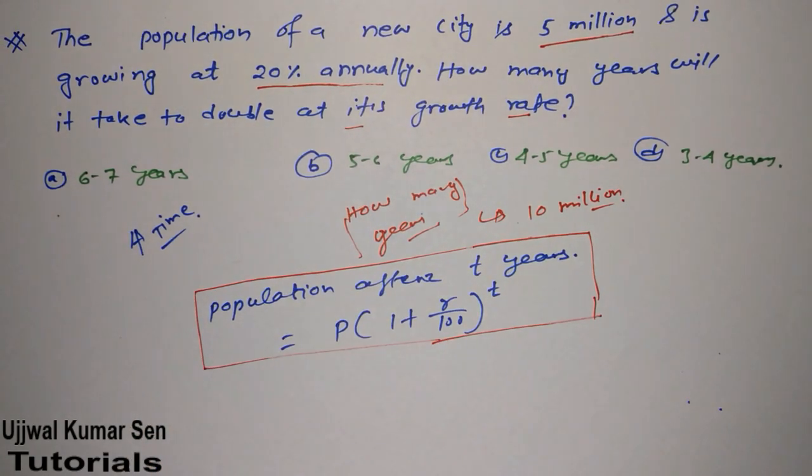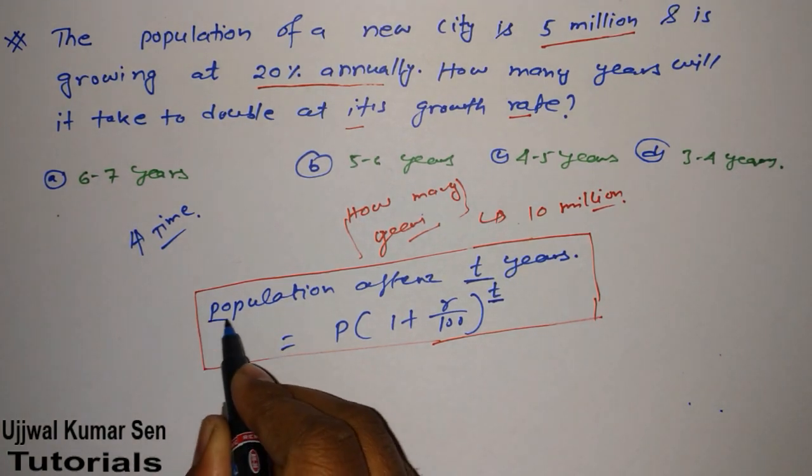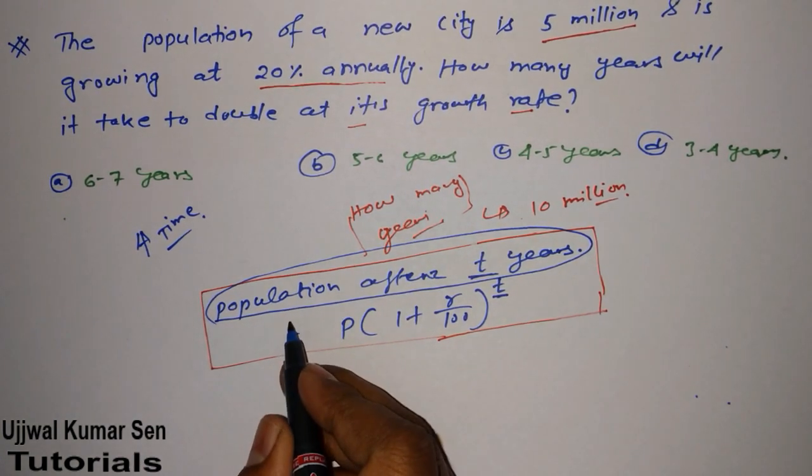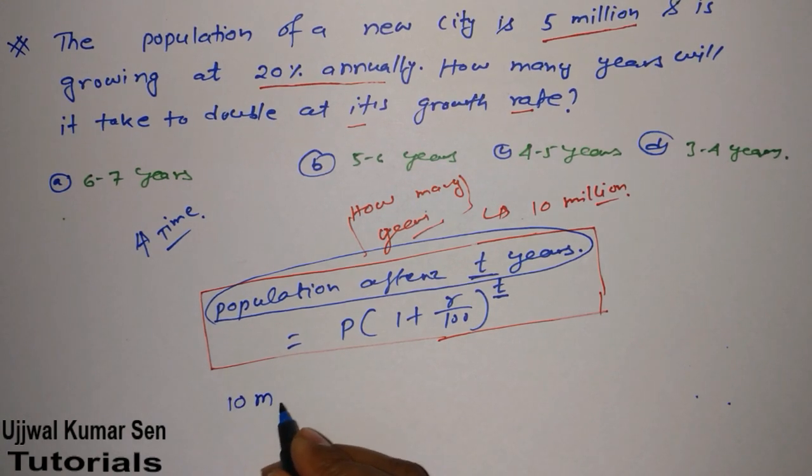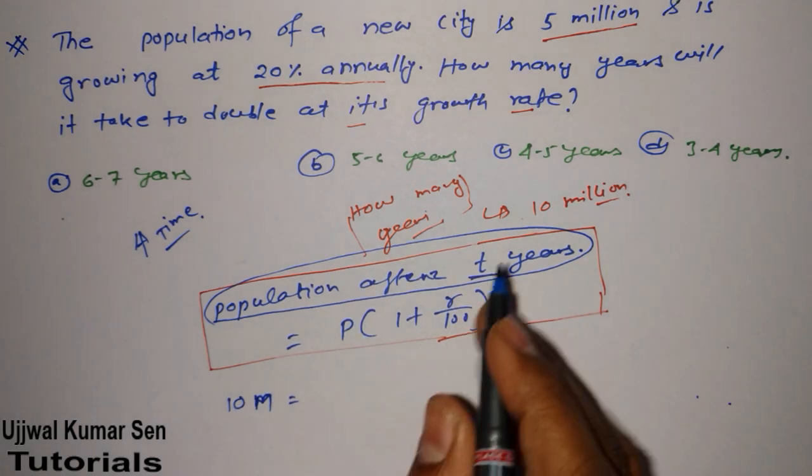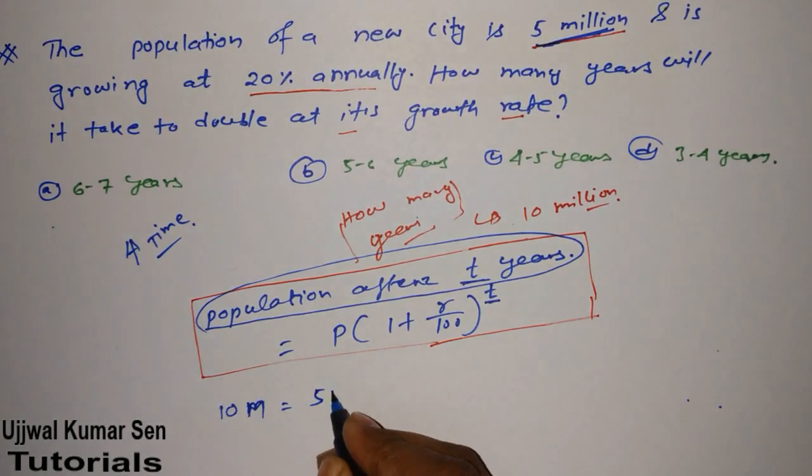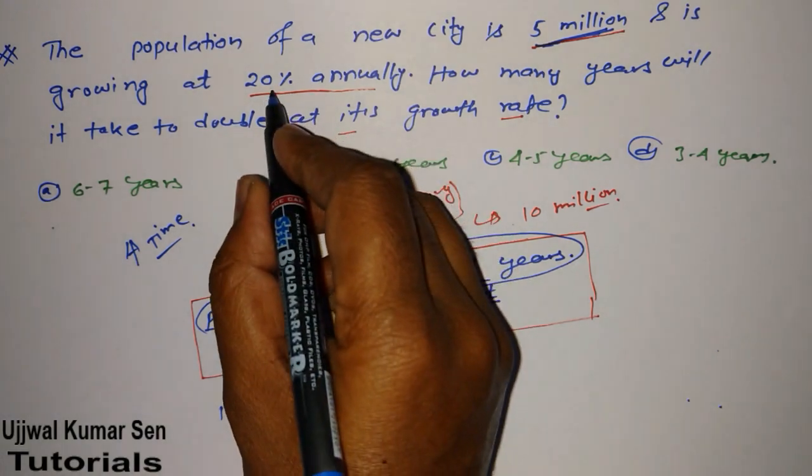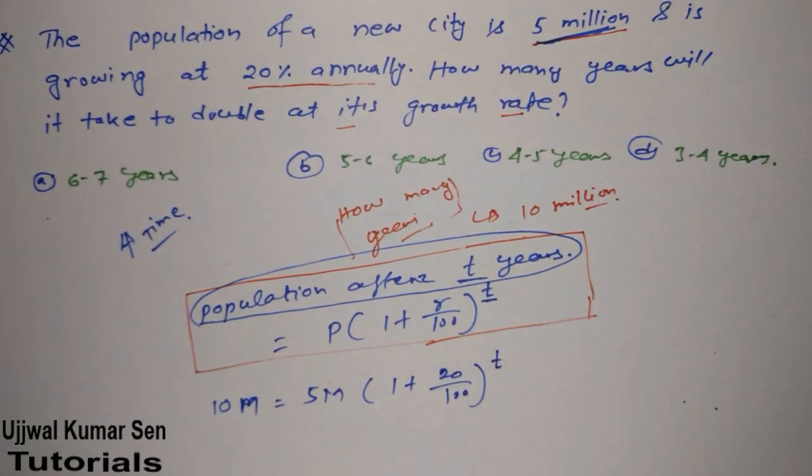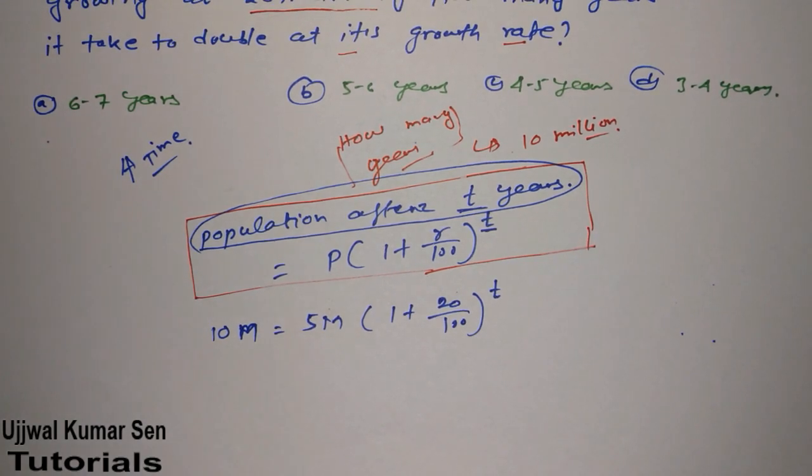What we have given - population will get doubled. How many years we have to find out? We have to find out t. We are given in this question population after t years. We don't know the value of t, but we know the population is 10 million. Total population right now, or the existing population, is 5 million. So: 1 plus r, the rate of increasing or growing, 20 divided by 100, whole to the power t. Now solve this equation and get the answer. We require a calculator.